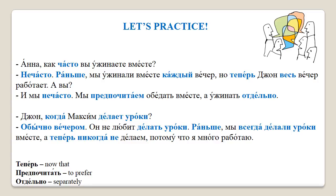Second dialogue — Джон, когда Максим делает уроки? Обычно вечером. Он не любит делать уроки. Раньше мы всегда делали уроки вместе, а теперь никогда не делаем, потому что я много работаю. Translation: 'John, when does Maxim do his homework?' 'Usually in the evening. He doesn't like to do his homework. Before, we always used to do homework together, but now we never do, because I work a lot.'